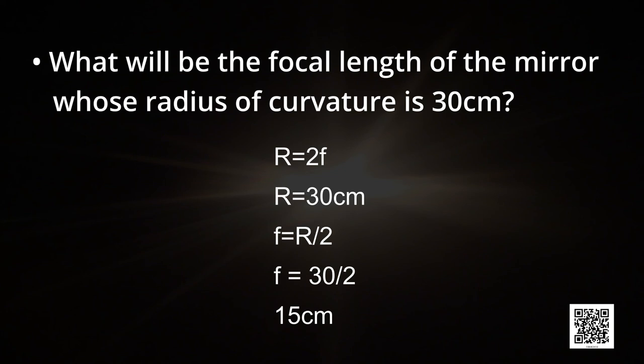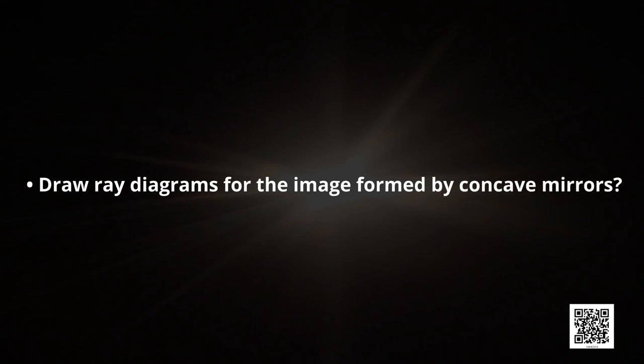Children, now I have a question for you to do in your notebooks. Do read your chapter thoroughly, understand it, and then do it in your notebook. The question is: draw ray diagrams for the image formed by concave mirrors — you have to draw all 6 ray diagrams for all 6 positions of the object. So dear children, here we come to an end of this chapter. I hope you understood the chapter nicely. We have learnt about different kinds of spherical mirrors — convex and concave — how they are used in different functions, how convex mirrors are used as rear view mirrors in vehicles, and how the images are formed. I hope you find the chapter very interesting. Keep studying, keep smiling, and stay healthy. Thank you.